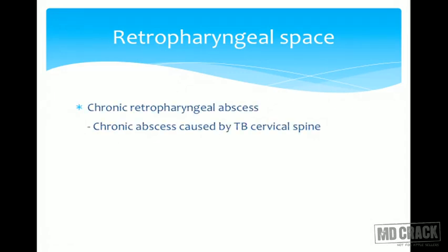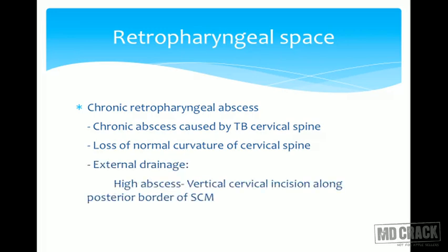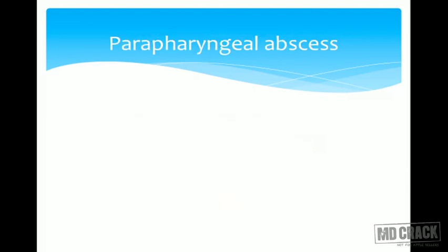Chronic retropharyngeal abscess is caused by tuberculosis of the cervical spine, with loss of normal cervical curvature. If it is a high abscess, a vertical incision along the posterior border of the sternocleidomastoid is used; if a low abscess, along the anterior border of the sternocleidomastoid.